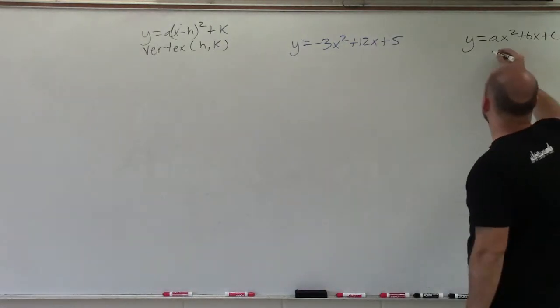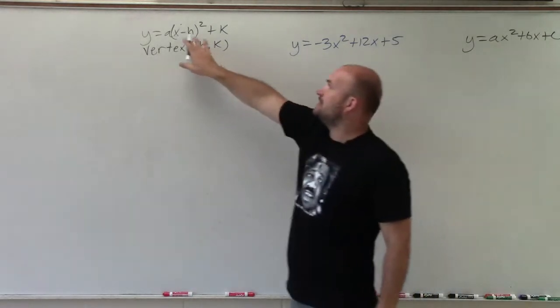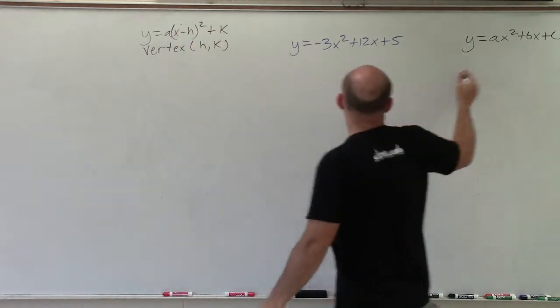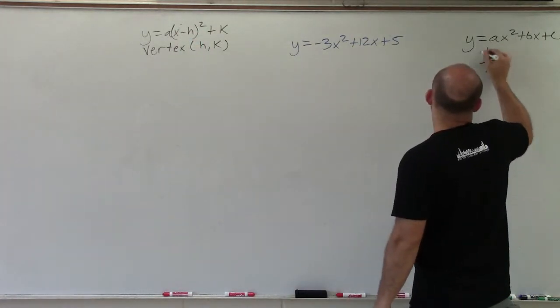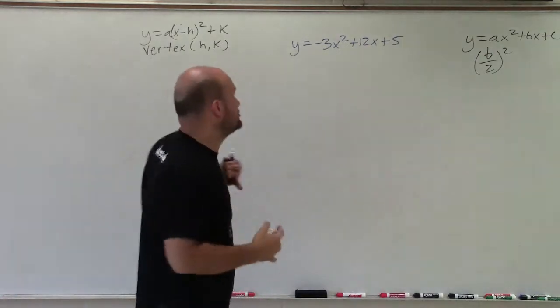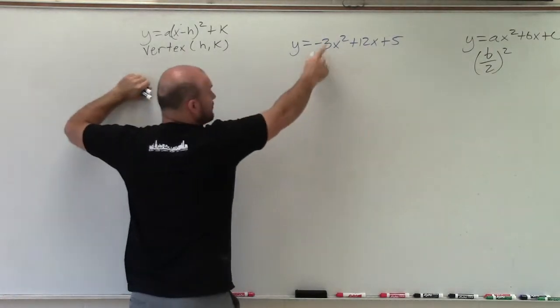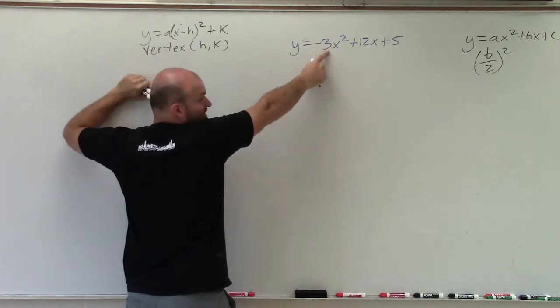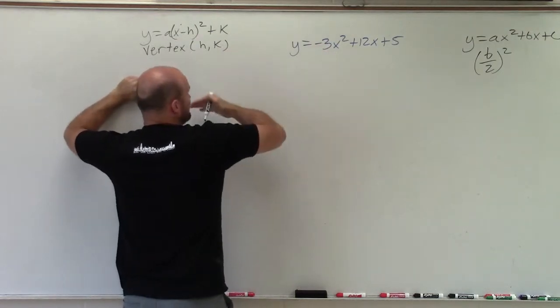By completing the square, we need to find a binomial squared. To do that, we need to take b divided by 2 and square it. But before we can do that, we got to make sure that our coefficient of our x squared is equal to 1. And right now, it's not equal to 1. There's a negative 3 there. So I need to factor out the negative 3.